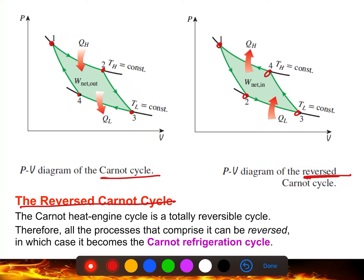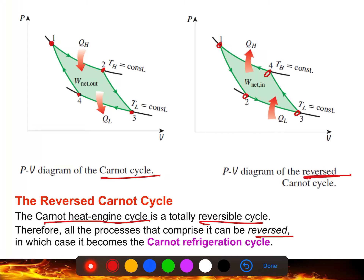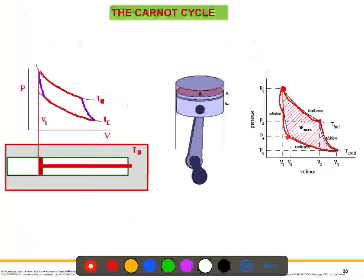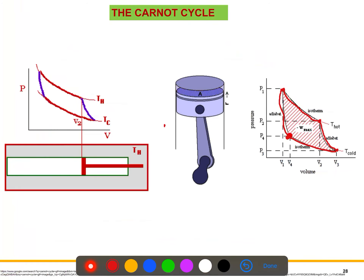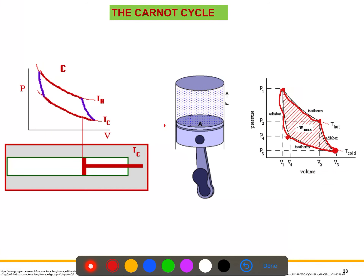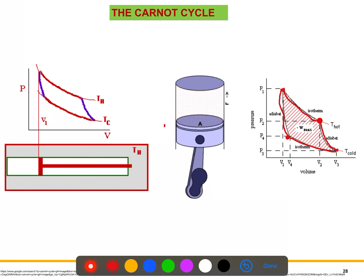The reverse Carnot cycle — the Carnot heat engine cycle is totally reversible, and all processes that comprise it can be reversed. This connects to the refrigeration cycle discussed earlier. Looking at this animation, you can clearly understand what is happening from state one to two, two to three, three to four, and four back to the initial state.